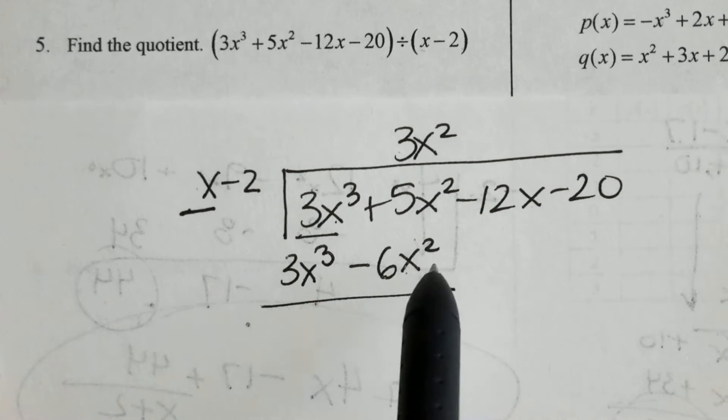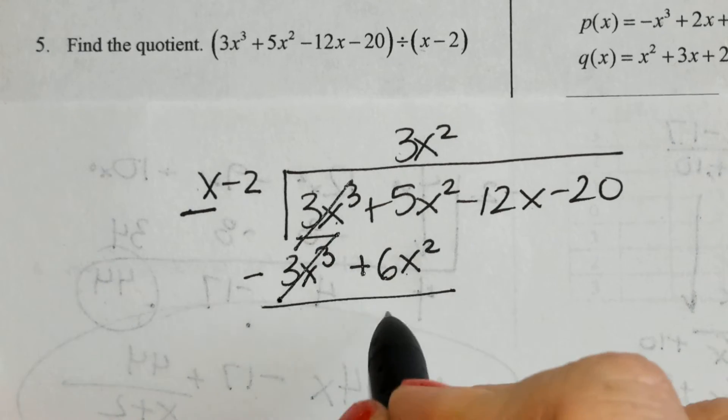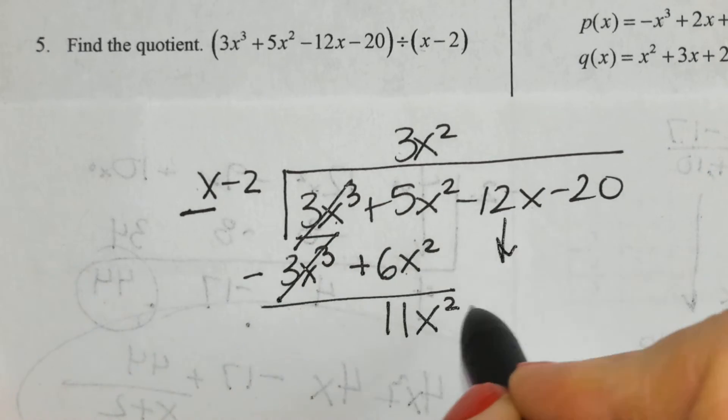Now, go to the 2nd level and change the sign. And now add straight down. Cancels out. 11x squared. Bring down the next term.